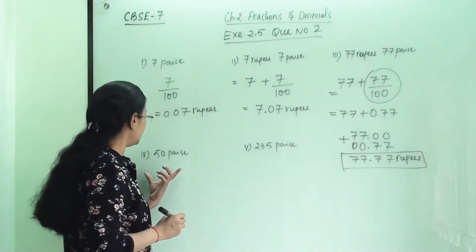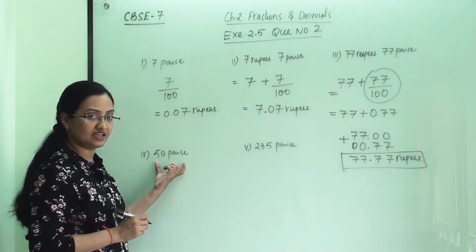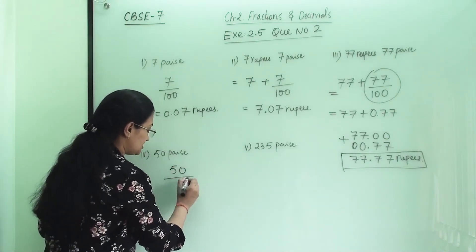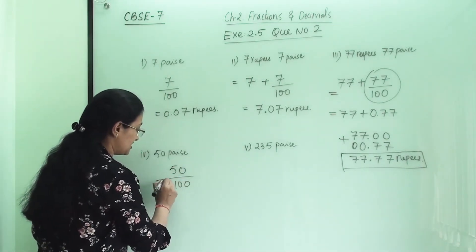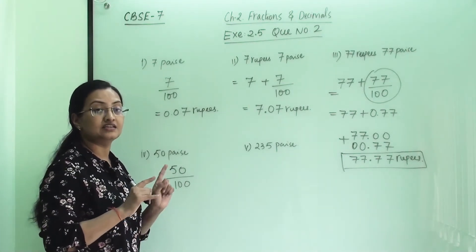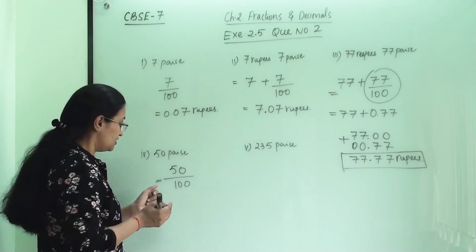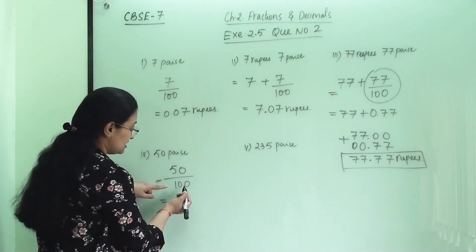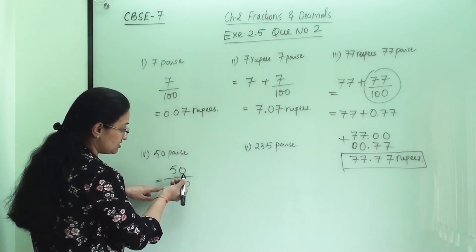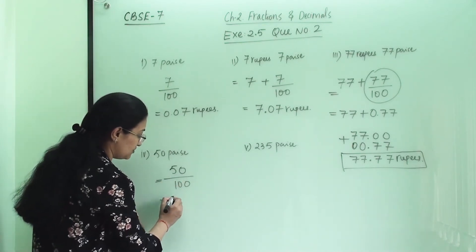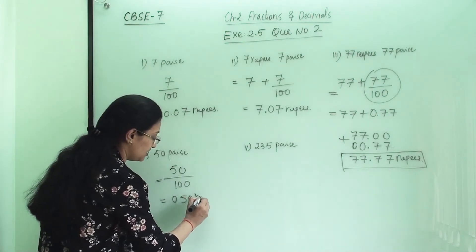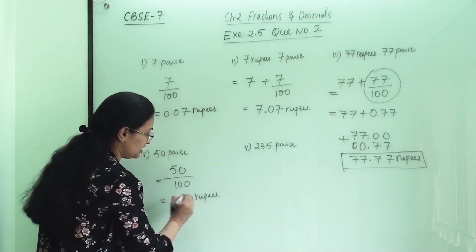The next is 50 paise. Here there are no rupees. So we write 50 with denominator 100, converting it into rupees. There are two zeros in the denominator, so counting two digits from the right: 1 and 2. We get 0.50 rupees.